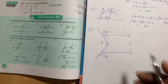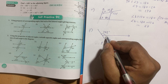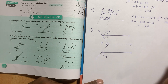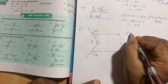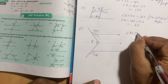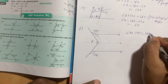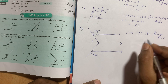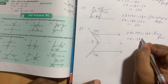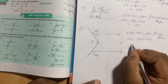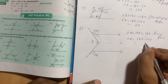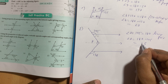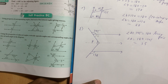To find angle A, angle A plus 145 degrees equals 180 degrees — linear pair property. So angle A equals 180 minus 145, which is 35 degrees.